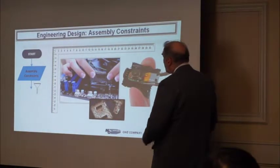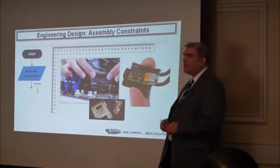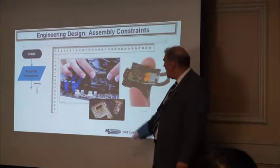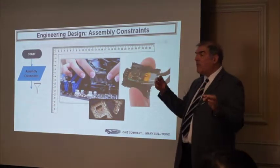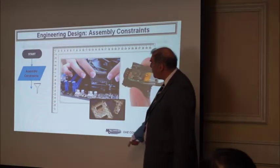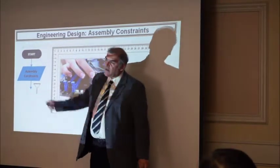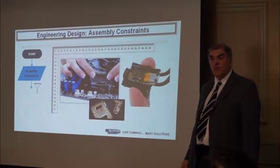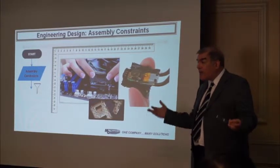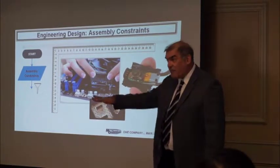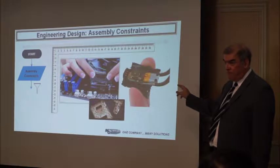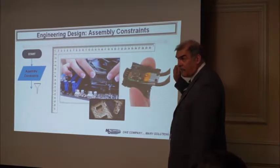The first step, surprisingly to many people, is you have to tell the material provider what the dimensions, size, type of material, and assembly constraints are, because these will act as filters. There are some materials you will not be able to use just because of the dimension of your assembly. Things like whether you're concerned about wicking under the PCB need to be discussed up front, because that affects what material we can suggest.